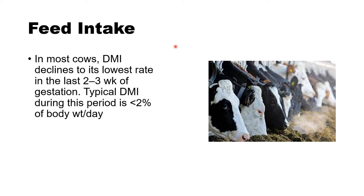In most cows, DMI declines to its lowest rate in the last two to three weeks of gestation. The typical DMI during this period is less than 2% of body weight per day, compared to the normal range of 3.5% to 4%.